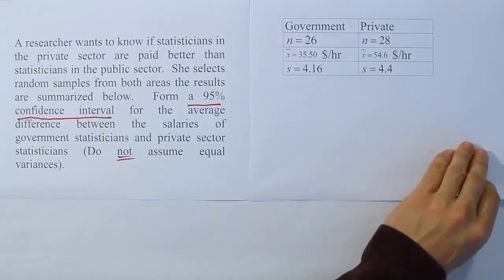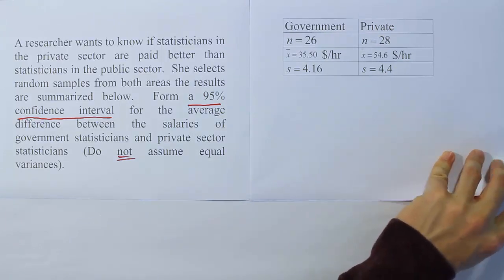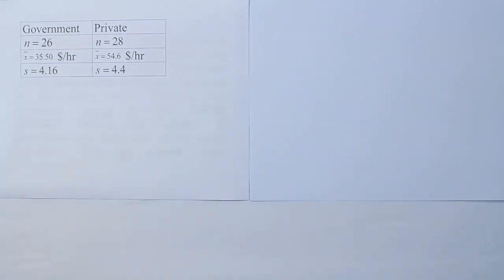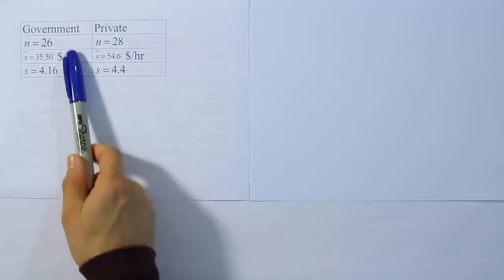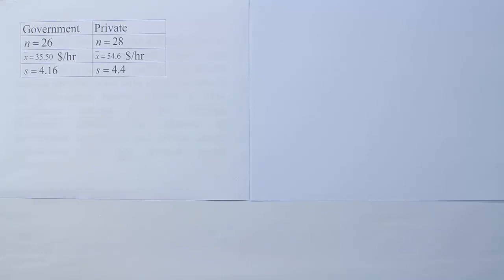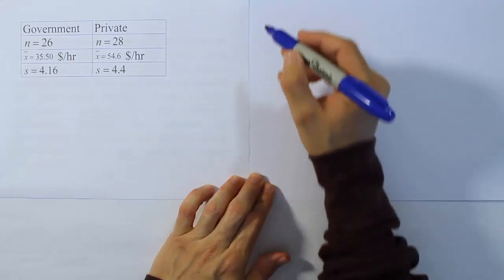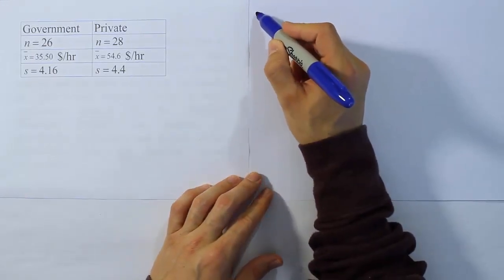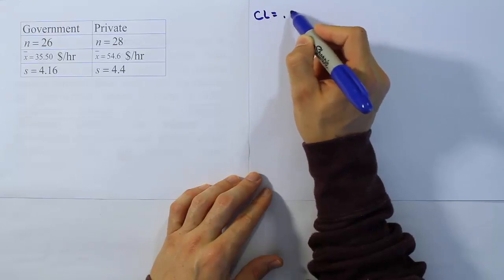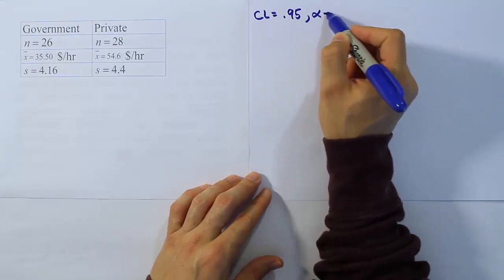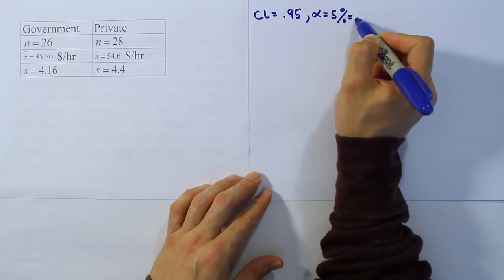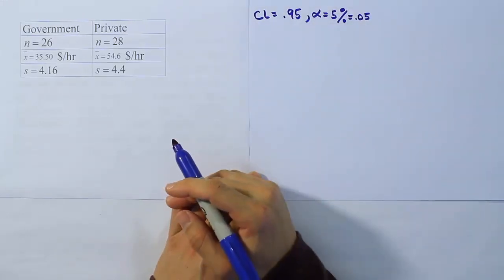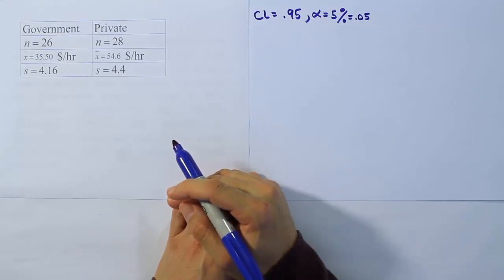Let's take that information and use it to start creating the confidence interval. I'm going to move this data over. We don't need the wording of the problem anymore. The first step is to record the data. That's already done for us here. The confidence level is 0.95. That means alpha is 0.05. Now the next step is going to be to get a table value.